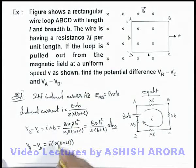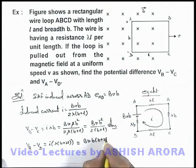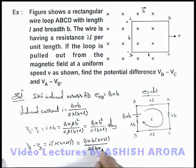If we substitute the value of i, the result is Bvb(b + 2l) divided by 2(b + l). That is the other answer to this problem.